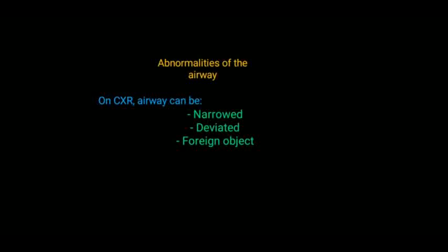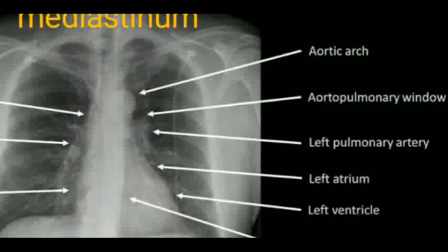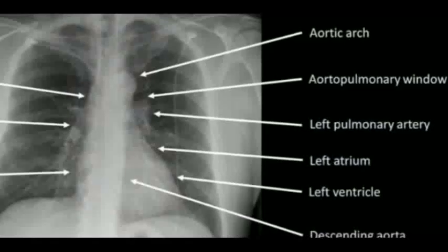The airway can be narrow, deviated, or have a foreign object present. Regarding the anatomy of the cardiovascular and mediastinum — knowing the anatomy is very important because it will help you differentiate from the abnormal chest X-ray. We will learn the normal findings of chest X-ray film. Firstly, the aortic arch — there is a notch present on the left portion of the lung.